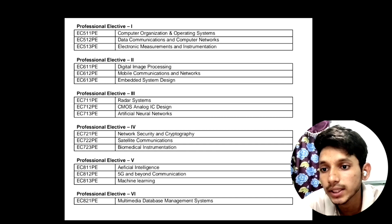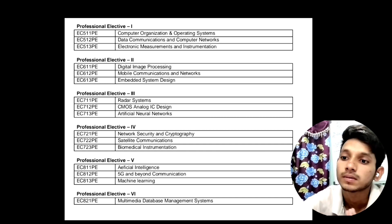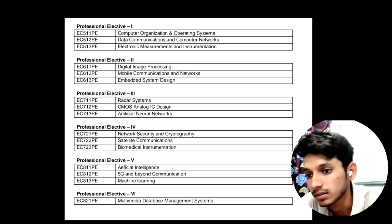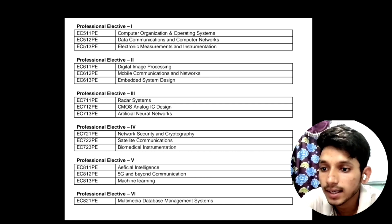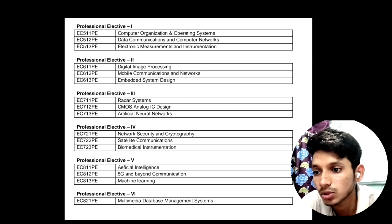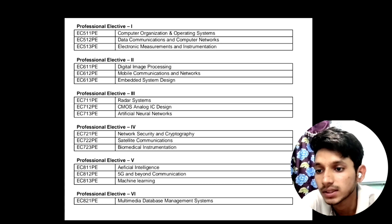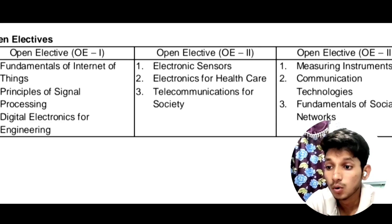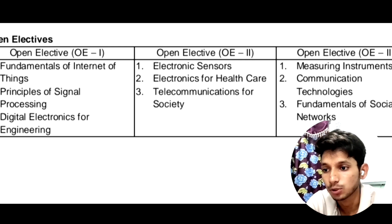In Professional Elective Three the subjects will be: Radar Systems, CMOS Analog IC Design, and Artificial Neural Networks. In Professional Elective Four the subjects are: Network Security and Cryptography, Satellite Communications, and Biomedical Instrumentation. In Professional Elective Five there are three subjects: Artificial Intelligence, 5G and Beyond Communication, and Machine Learning. In Professional Elective Six there is only one subject: Multimedia Database Management Systems.